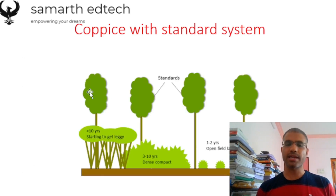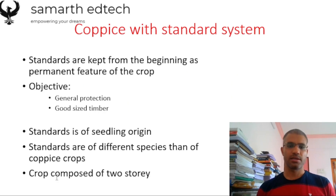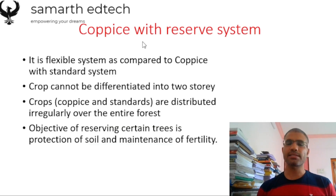The standards are of different species than the coppice crops. For example, the standards could be Azadirachta indica and the coppices could be Shorea robusta. So the standards are different from your coppice crop, and the crop is composed of two storeys: the first storey of standards and the second storey of coppices.